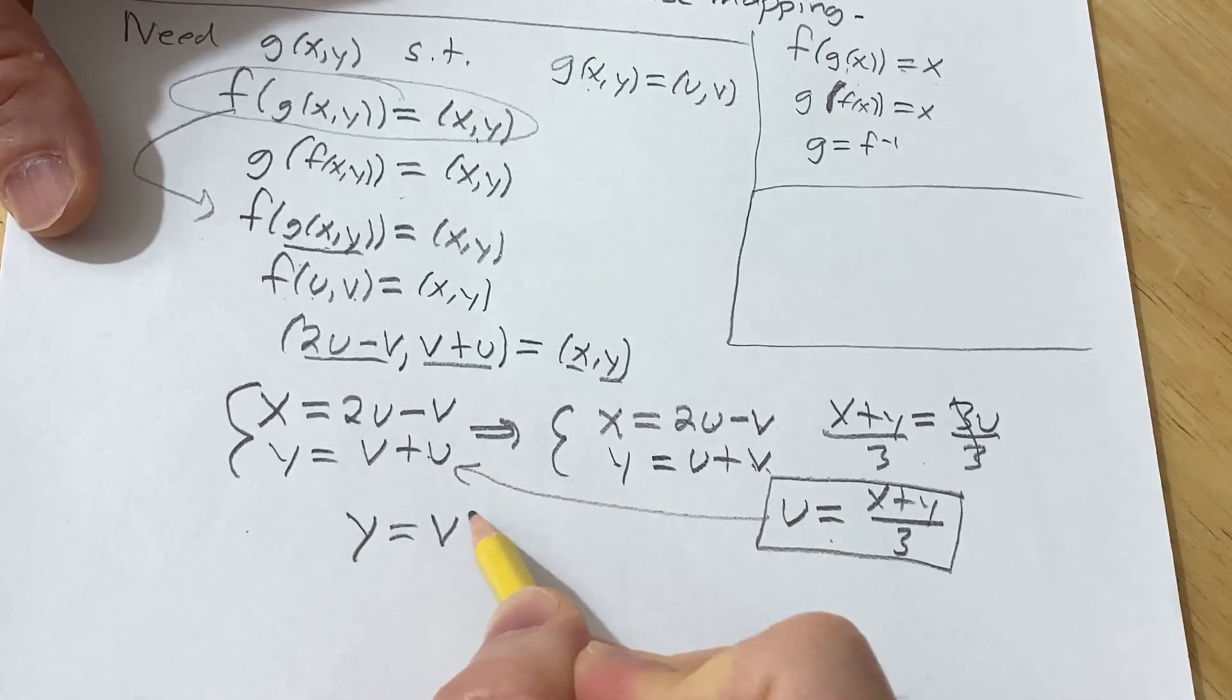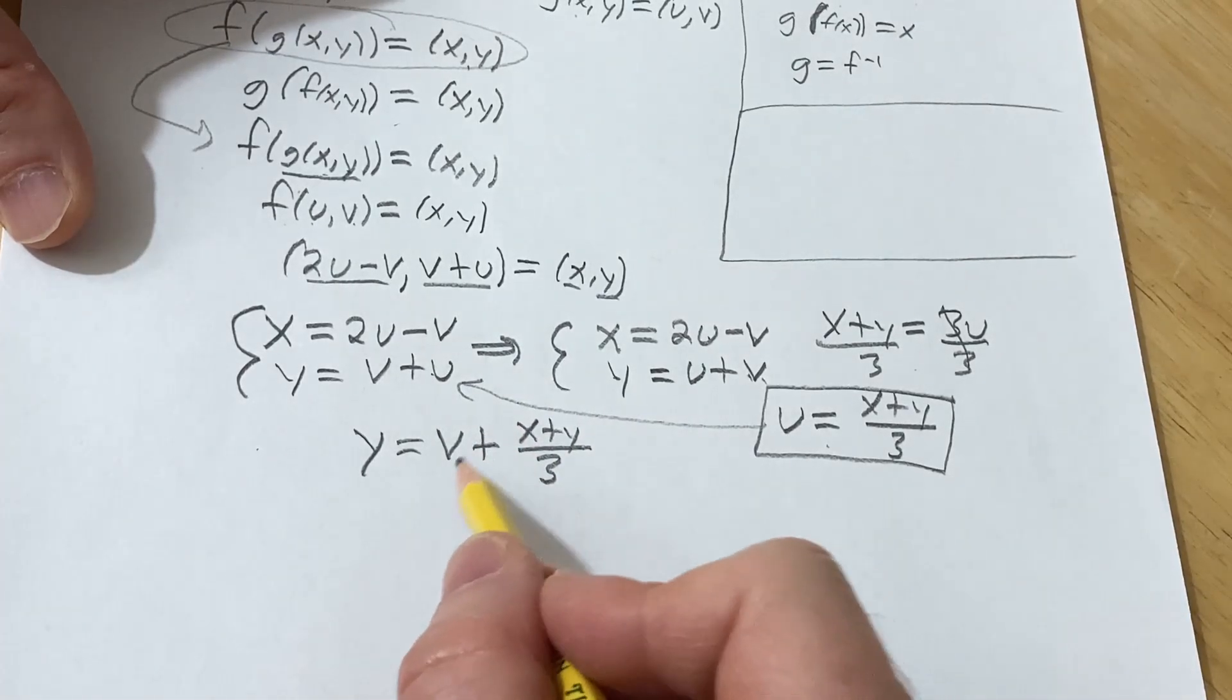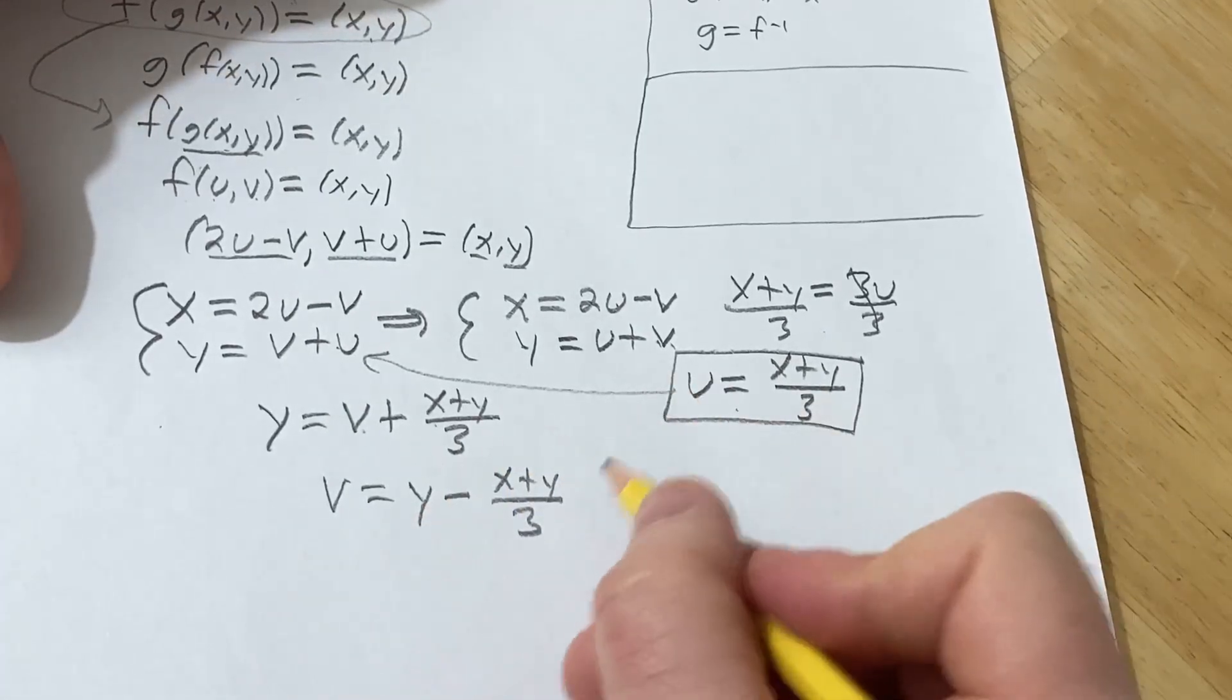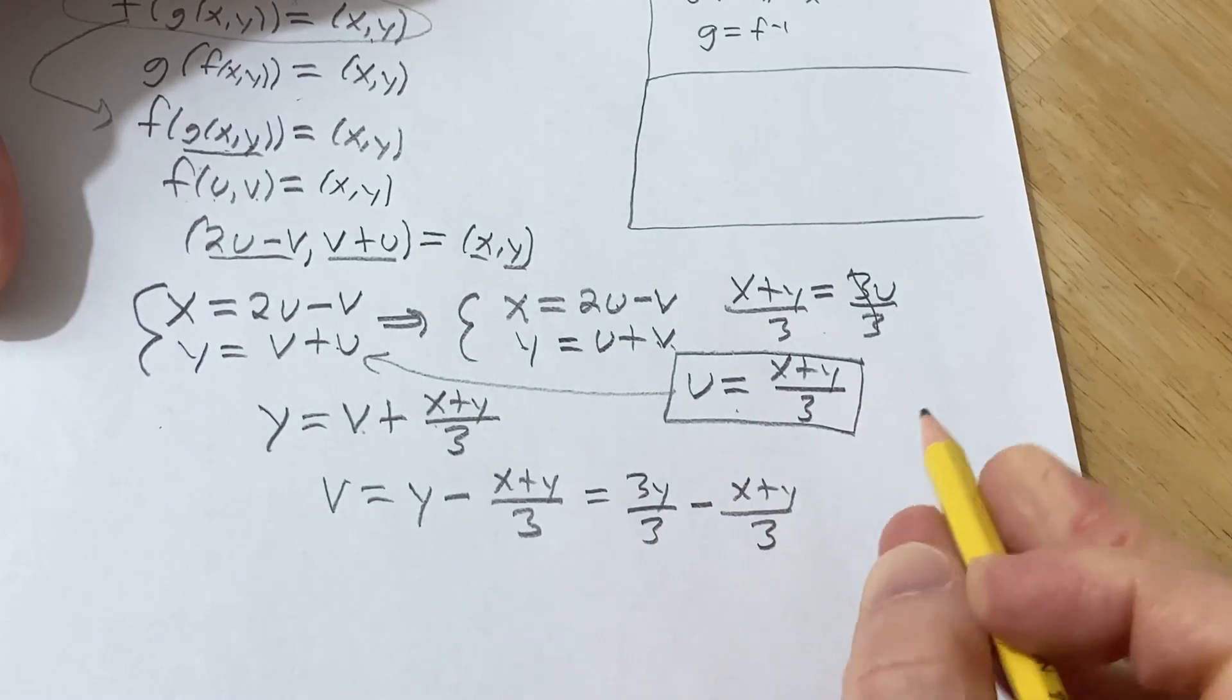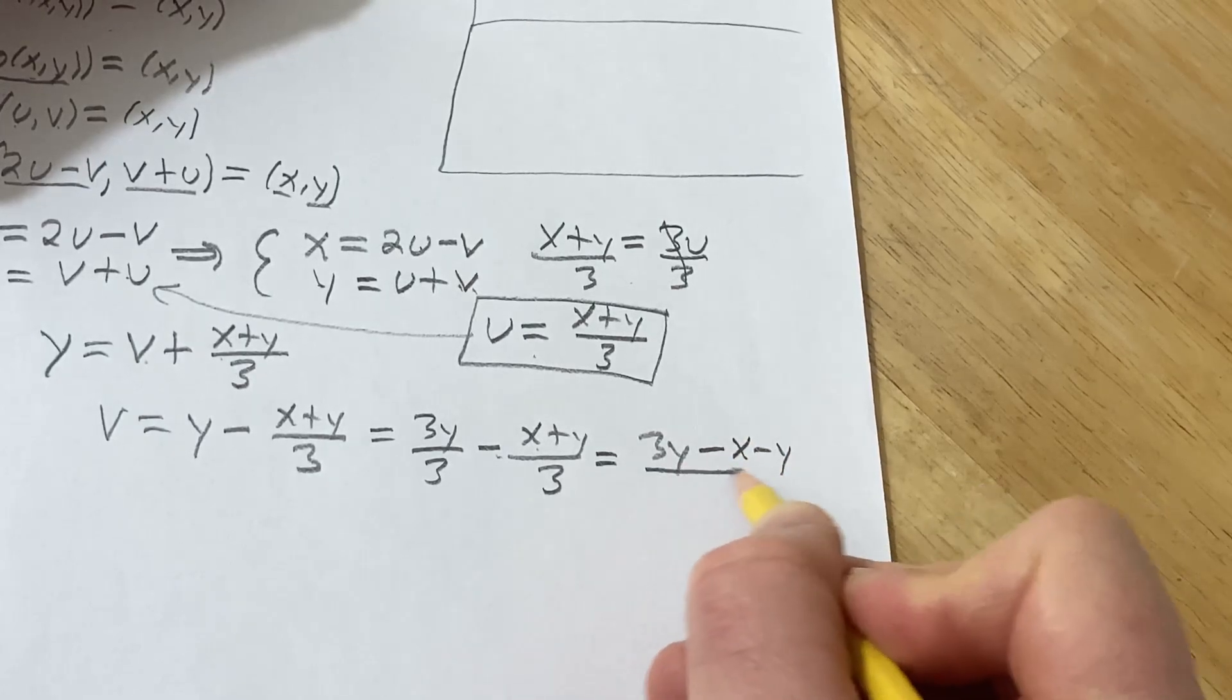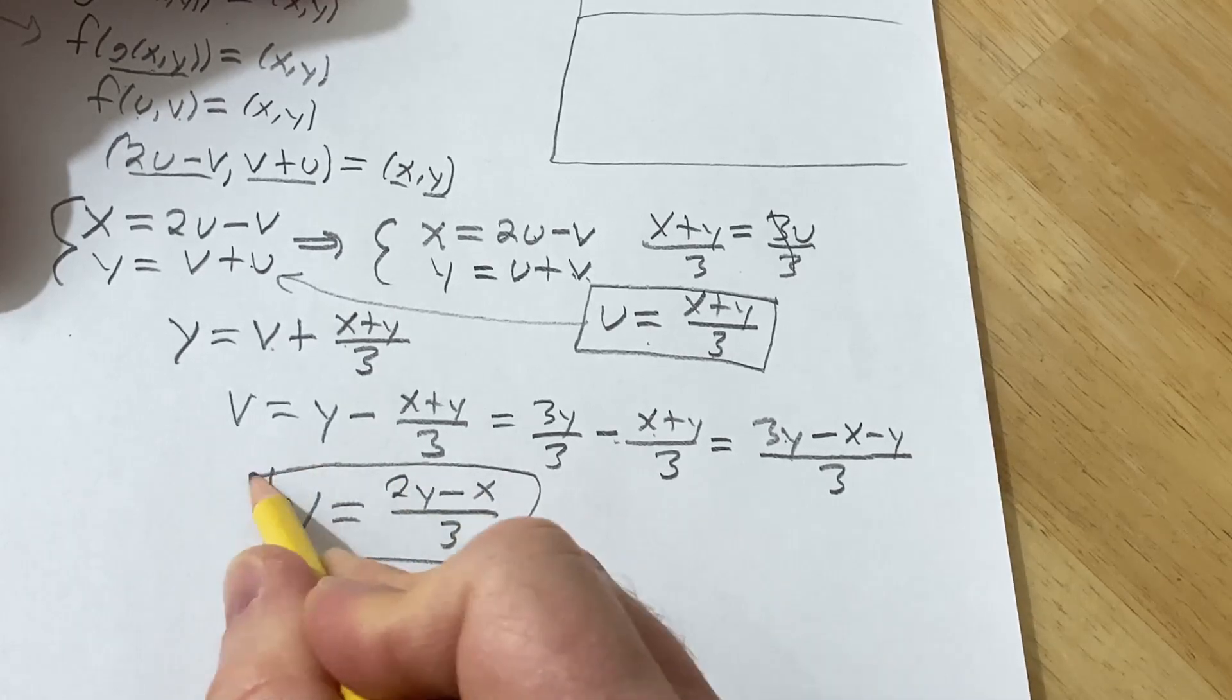Now that we have u, we can plug it back in here to get v. So let's do that. So we get y equals v + (x + y)/3. Notice I'm not skipping any steps here. I feel like it's really easy to mess up. And we're looking for v. So we can subtract this piece. So we get v equals y - (x + y)/3. To combine these, we can write the y as 3y/3 minus this. And then this is equal to 3y, make sure to distribute the negative sign here, so it'll be minus x minus y over 3. So v is equal to, so 3y minus y is 2y, minus x over 3.